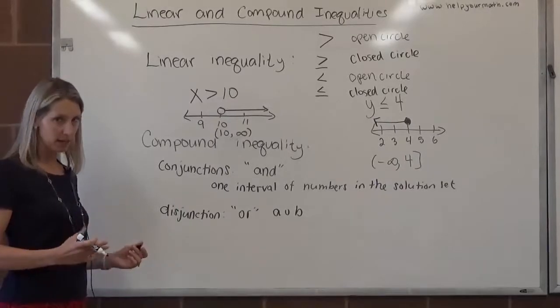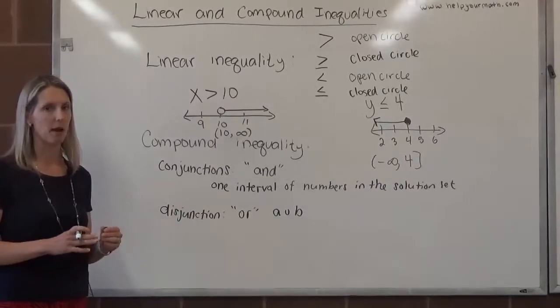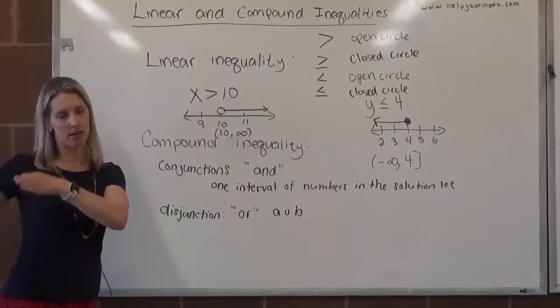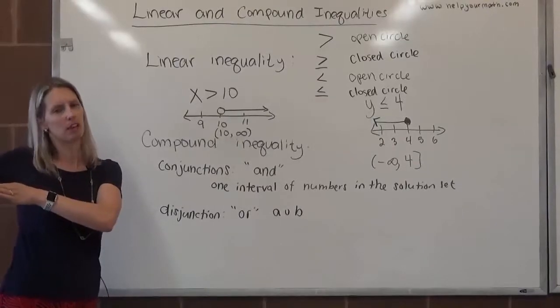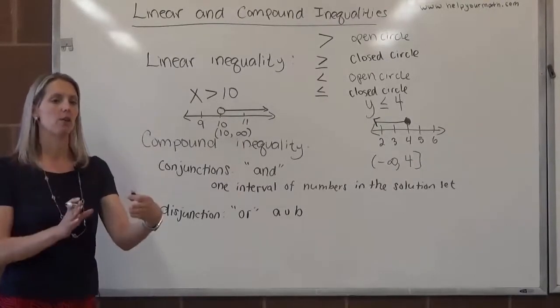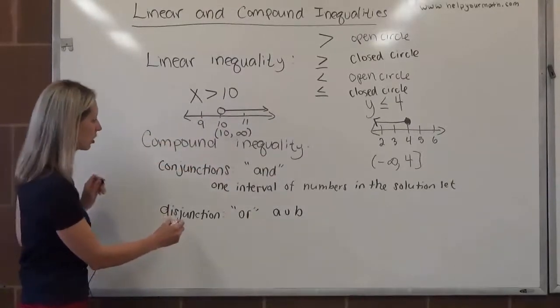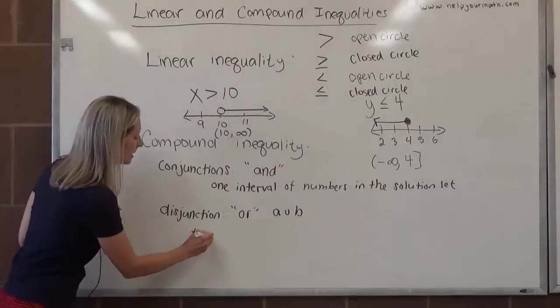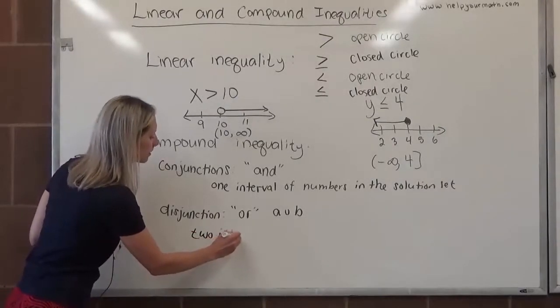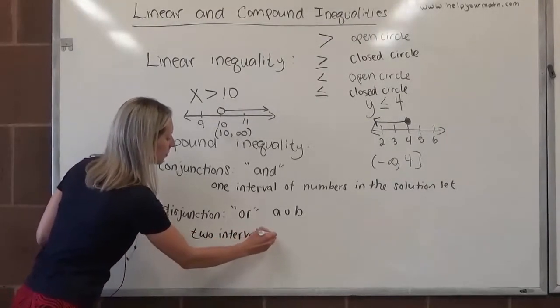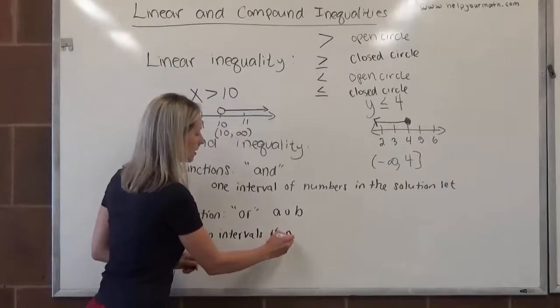With disjunction, we use the word or. With disjunctions, typically we will have two intervals of numbers where there is one that has no least point that starts at negative infinity and goes somewhere, and then it stops, and there's a break, and then we have a second interval of numbers. We typically see two intervals of numbers in the solution set.